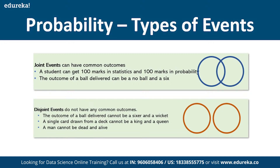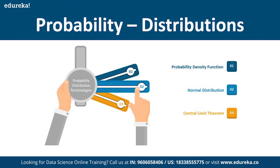Other important terms used in probability include the probability density function, called PDF, the normal distribution function, and the central limit theorem. The probability density function — shortened to PDF — is an equation that describes the continuous probability distribution of a variable.